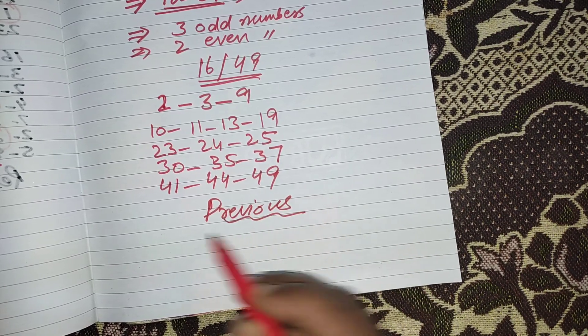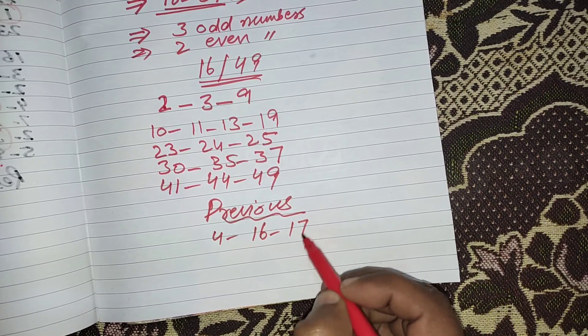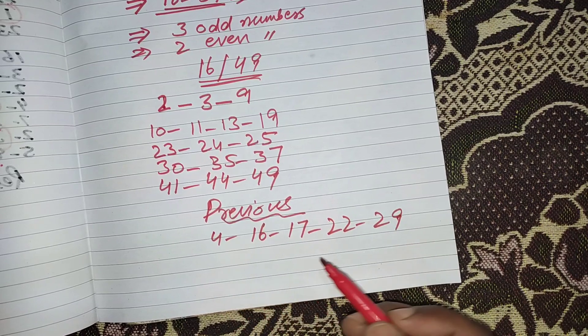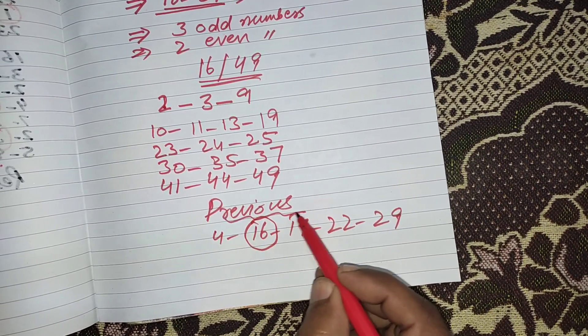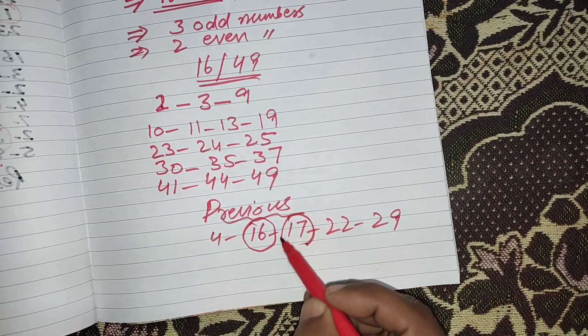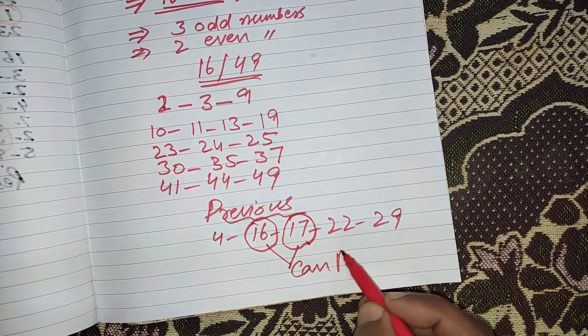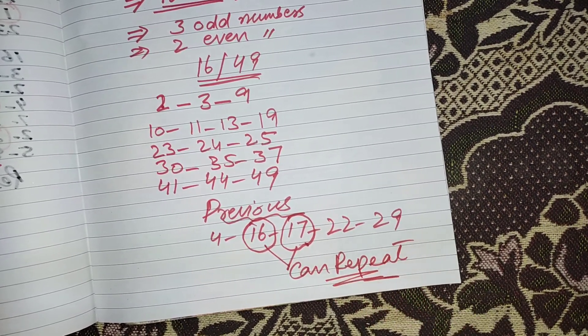Previous result was 4, 16, 17, 22 and 29. If the numbers will repeat, then 16 and 17. These numbers can repeat in the upcoming draw.